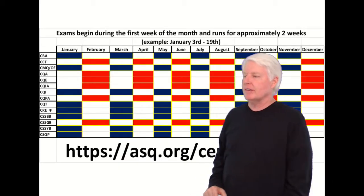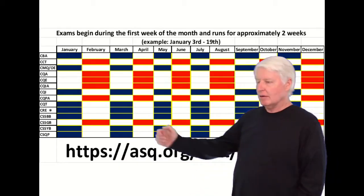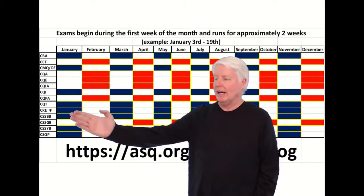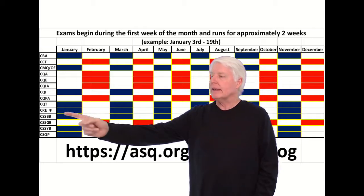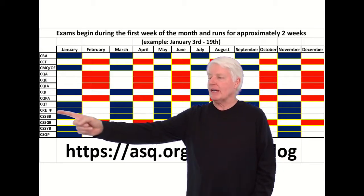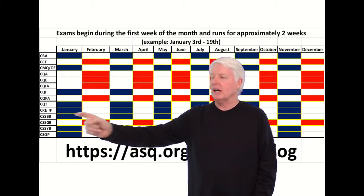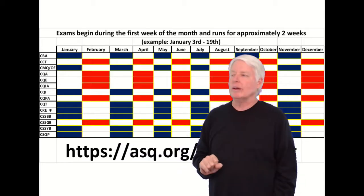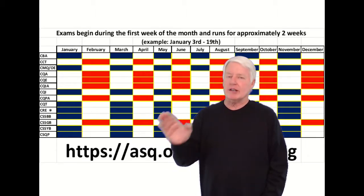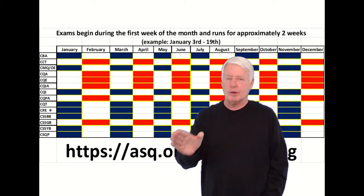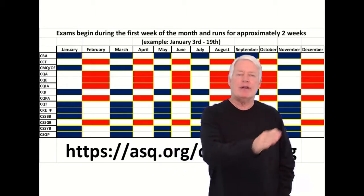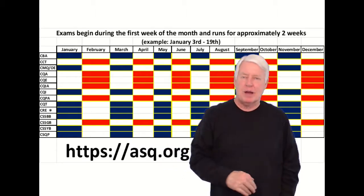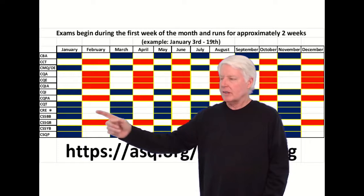That's a great question for the Certified Reliability Engineer — one of my favorite certifications, and a very difficult one. The CRE has an asterisk right by it; it's on the January cycle. What does that mean? They'll test you every year starting in January, then every other month throughout the year.